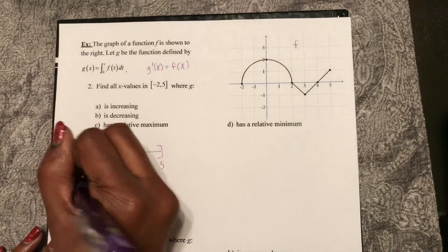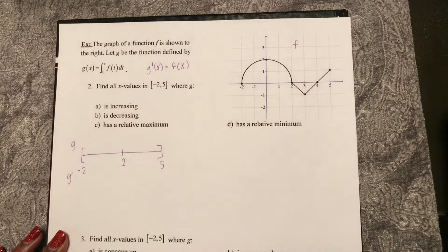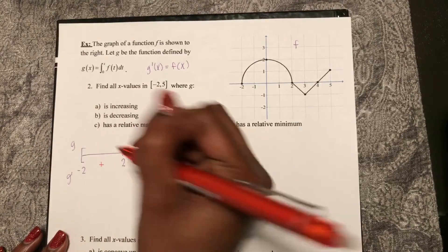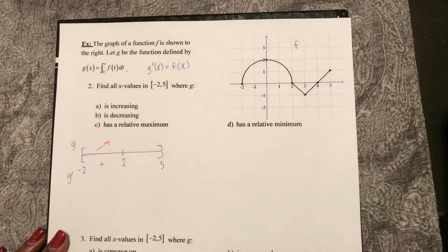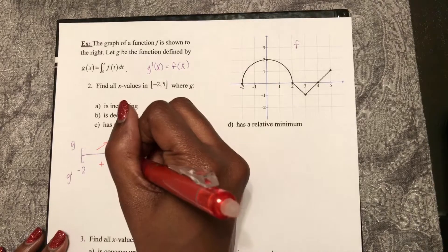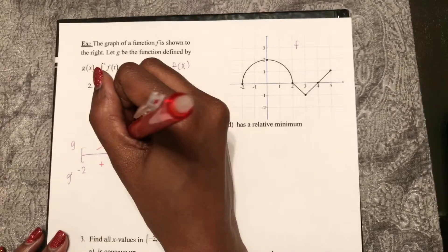So g prime and g. It's positive until 2, which means it's increasing. And then after 2, it goes negative. That means it's decreasing.